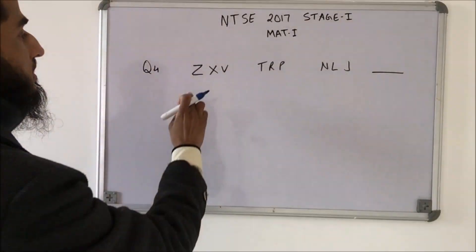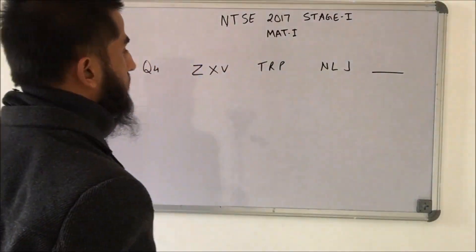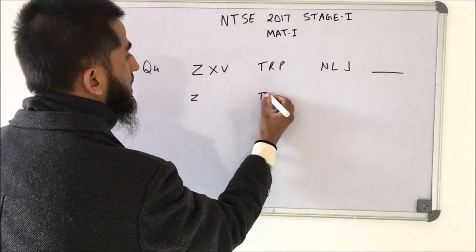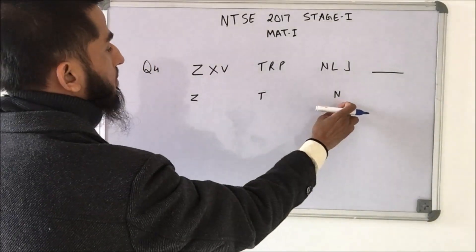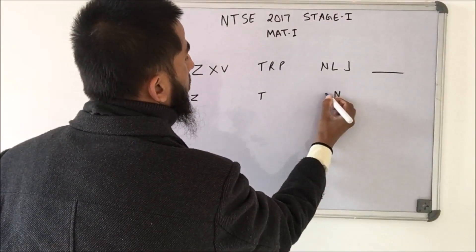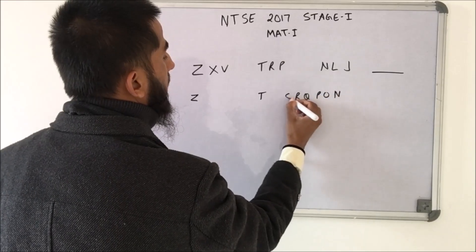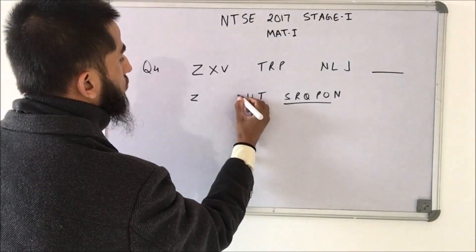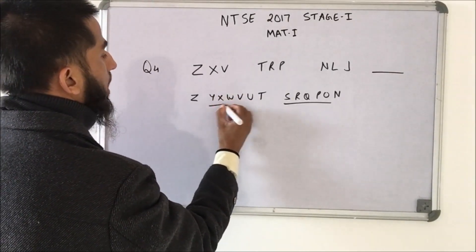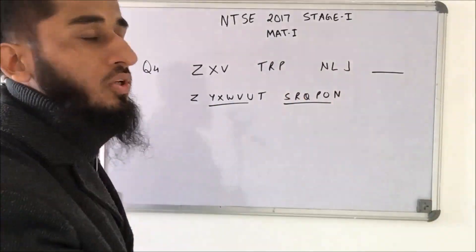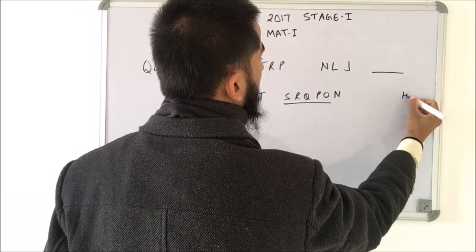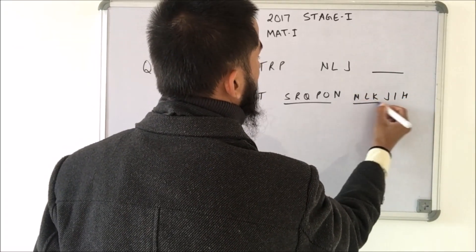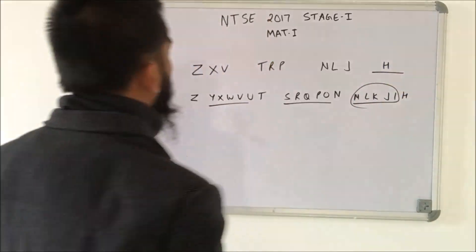Now we have a series: Z, X, V, T, R, P, N, J — we need to find out the last term. Let's find the pattern. Taking the first terms Z, T and N: the direction is N, O, P, Q, R, S — five missing terms. Then U, V, W, X, Y — again five terms. So we should have five terms here: H, I, J, K, L, M. So the first term should be H.